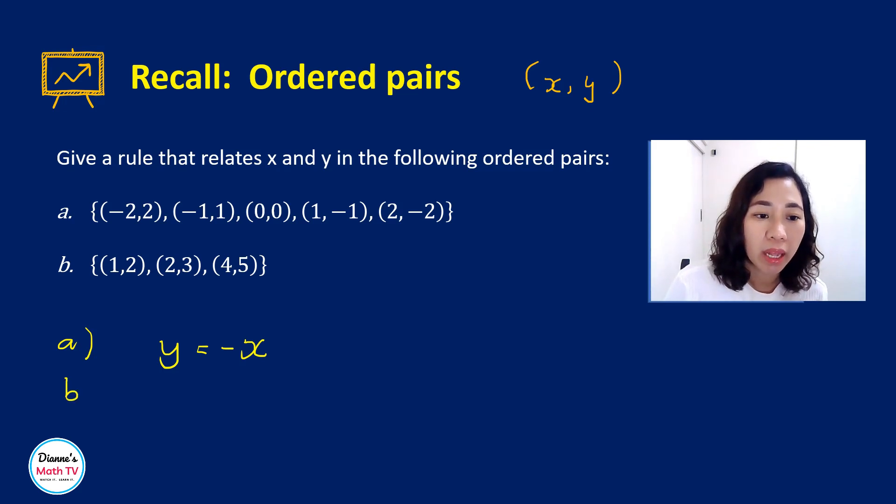Now, what about letter B? Can you determine what the rule is? You have 1, 2, 2, 3, and 4, 5. What can you observe, class, about the y-coordinate here?